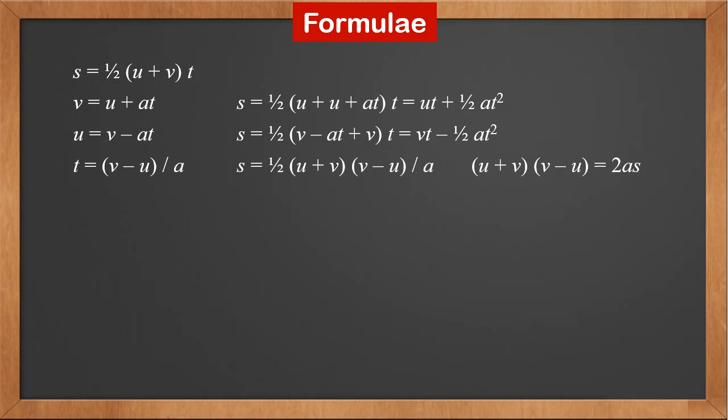From v equals u plus at, we get t equals v minus u over a. Substituting t into the first equation, we get s equals half (u plus v) times (v minus u) over a. So u plus v times v minus u equals 2as. This gives us v squared minus u squared equals 2as, and therefore v squared equals u squared plus 2as.